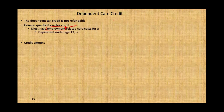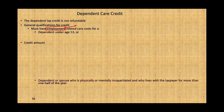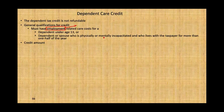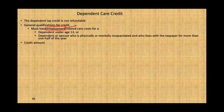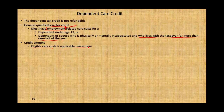For a qualifying dependent, they must be under the age of 13, or a dependent or spouse who is physically or mentally incapacitated and lives with the taxpayer for more than half of the year. The credit amount equals the eligible care cost times an applicable percentage, which ranges from 20% to 35% depending on your adjusted gross income.